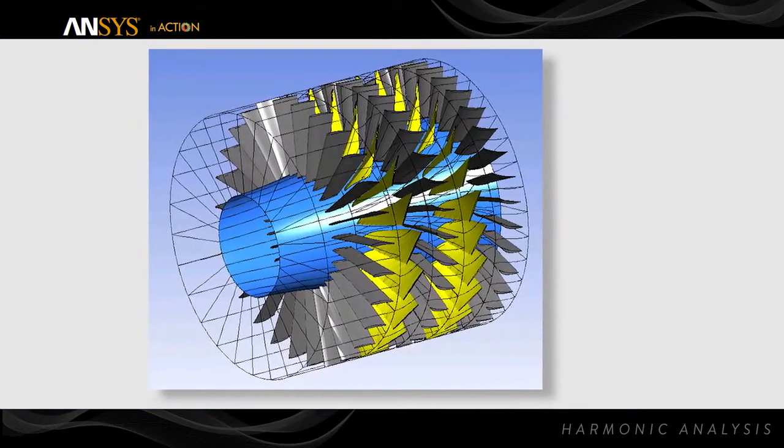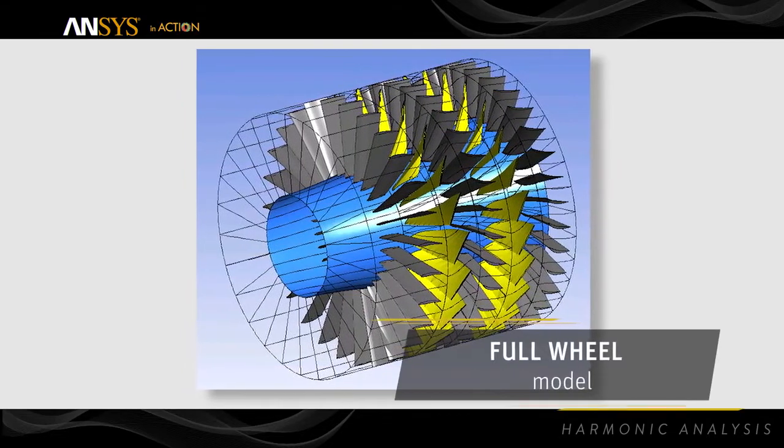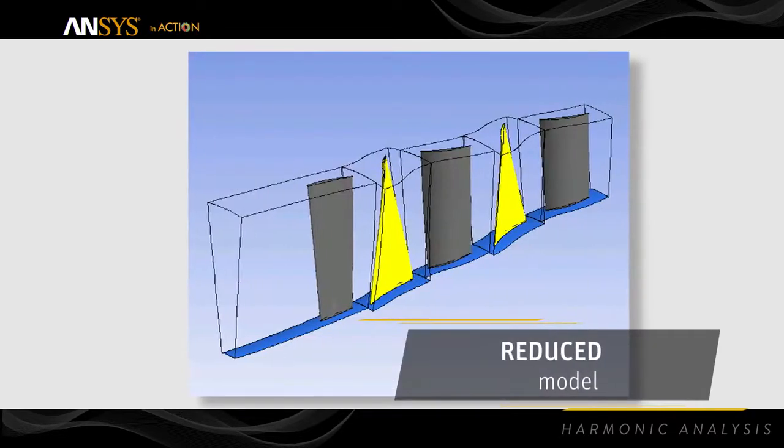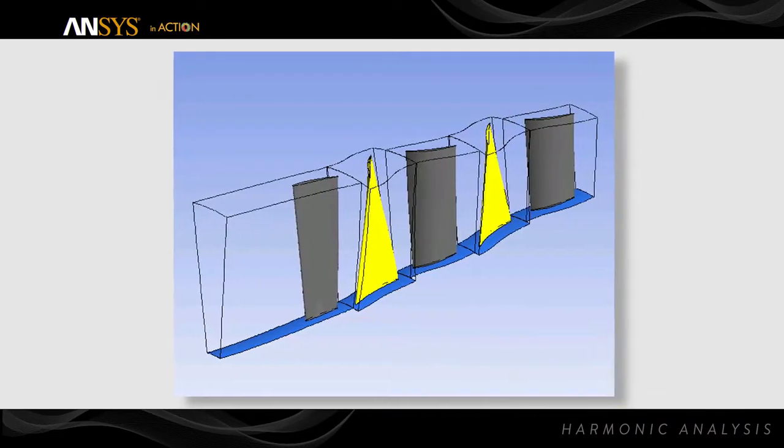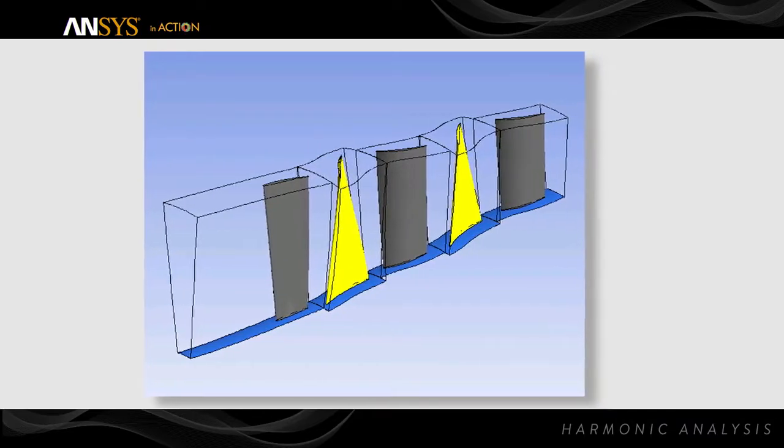Transient blade row with pitch change models offers solutions 10 times faster than full-wheel transient simulation by solving the turbomachinery flow problem on reduced geometry of one or few blades per row without sacrificing solution fidelity and accuracy.